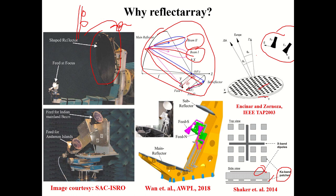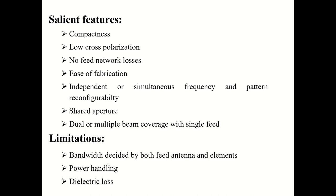To consolidate the advantages of reflectarray: first, space is conserved with a folding mechanism available; second, shaped beams can be achieved with a flat surface instead of a shaped parabolic reflector; third, dual beam operation is achievable with a simple reflectarray structure; fourth, dual-band operation is achievable by integrating two-band elements in different PCB layers.